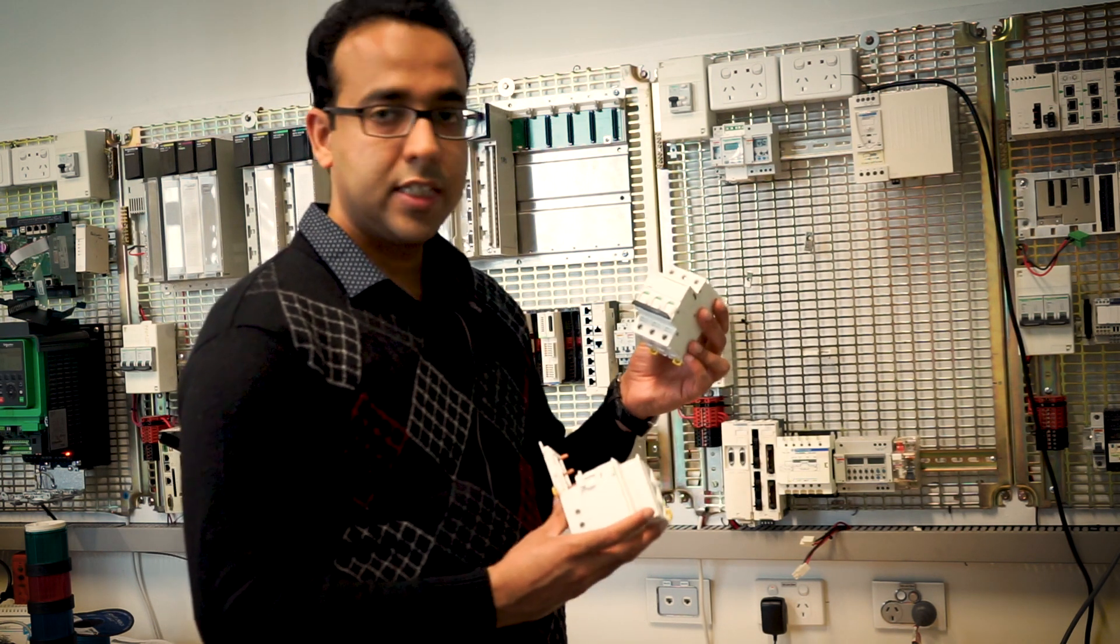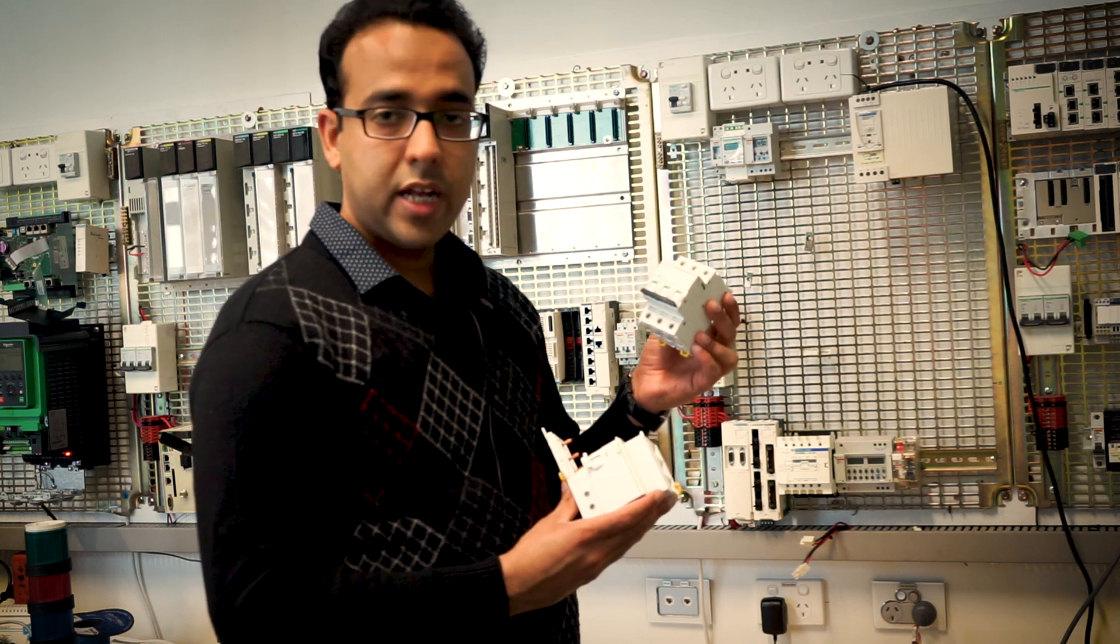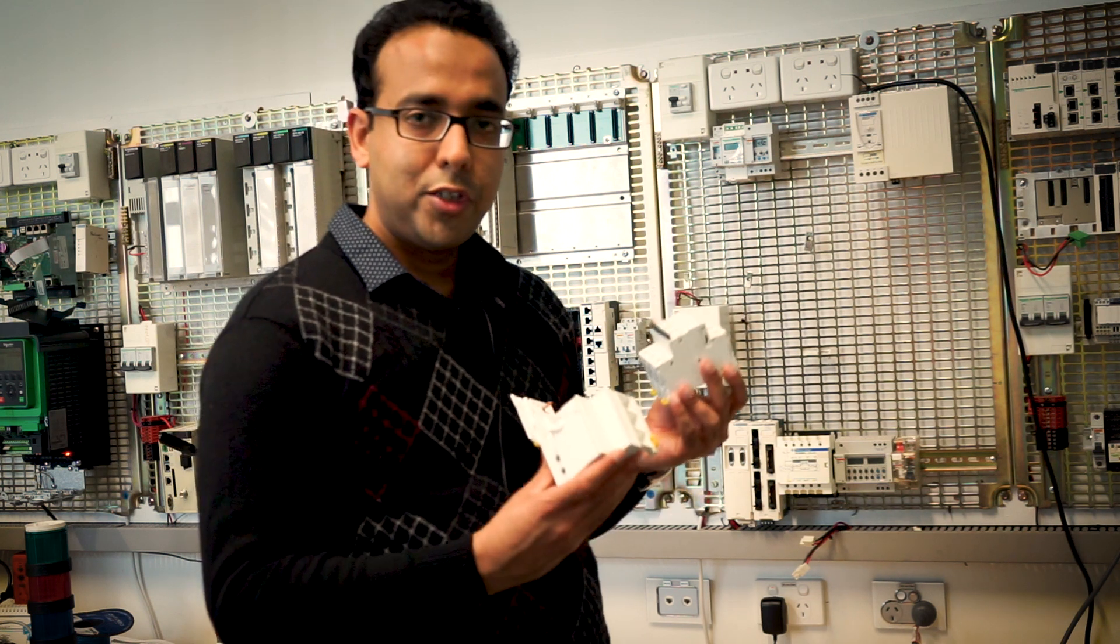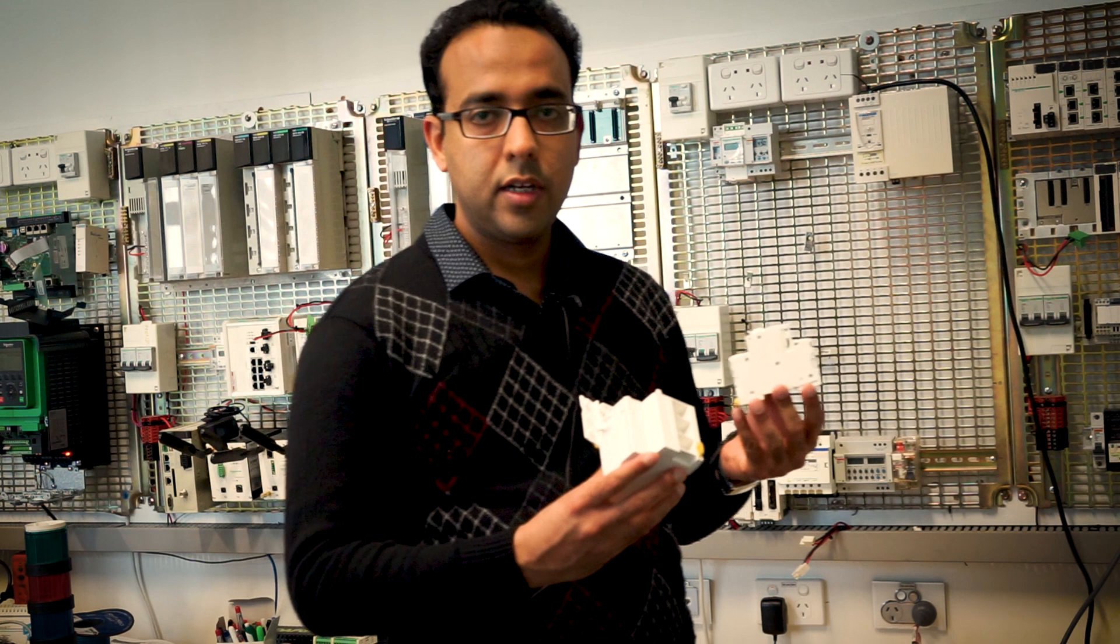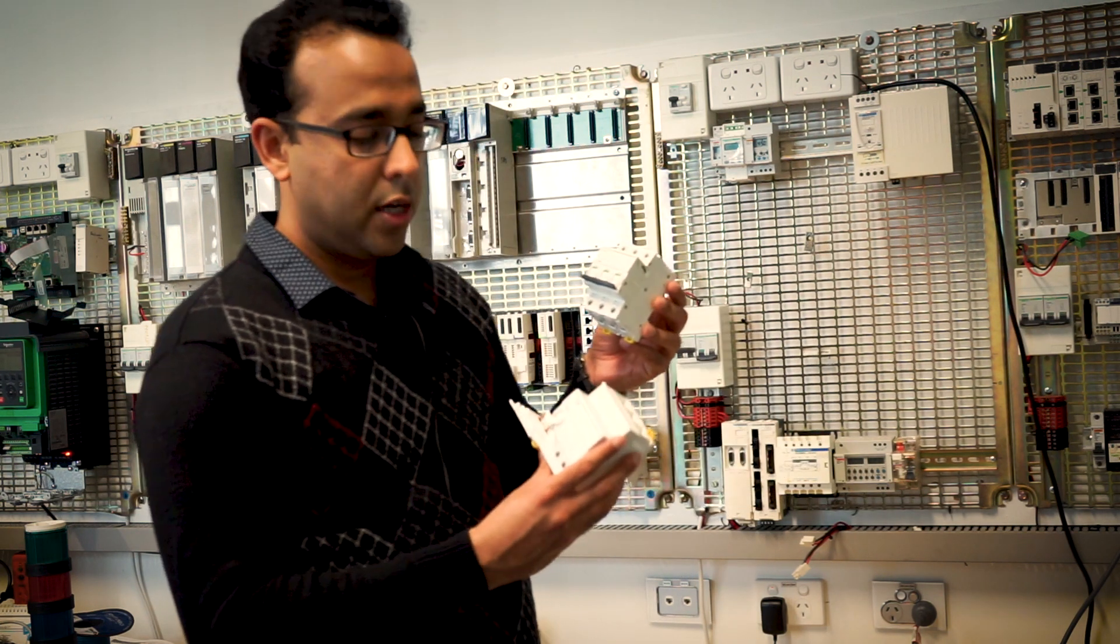This is an IC60N C-curve 10-amp circuit breaker and I will show you how you can easily fit it and convert this circuit breaker into an RCBO.